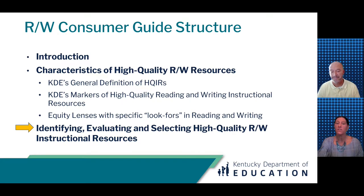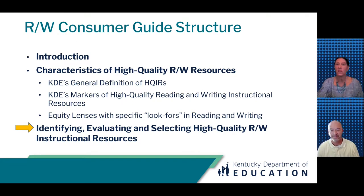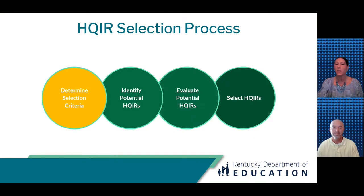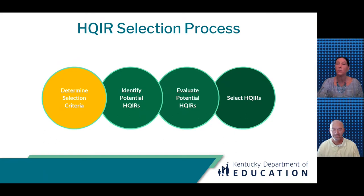The last part of the consumer guide outlines the four-step process districts can use to identify, evaluate, and select high quality reading and writing instructional resources. This is the same process found in phase three, step one of the curriculum development process. The four steps start with determining selection criteria based on your local instructional vision and the markers of high quality reading and writing resources from the consumer guide. Then the local curriculum team identifies potential HQ IRs to further explore, evaluates two to four potential HQIRs against the selection criteria, and finally selects a primary HQIR to support implementation of the instructional vision and the local curriculum.